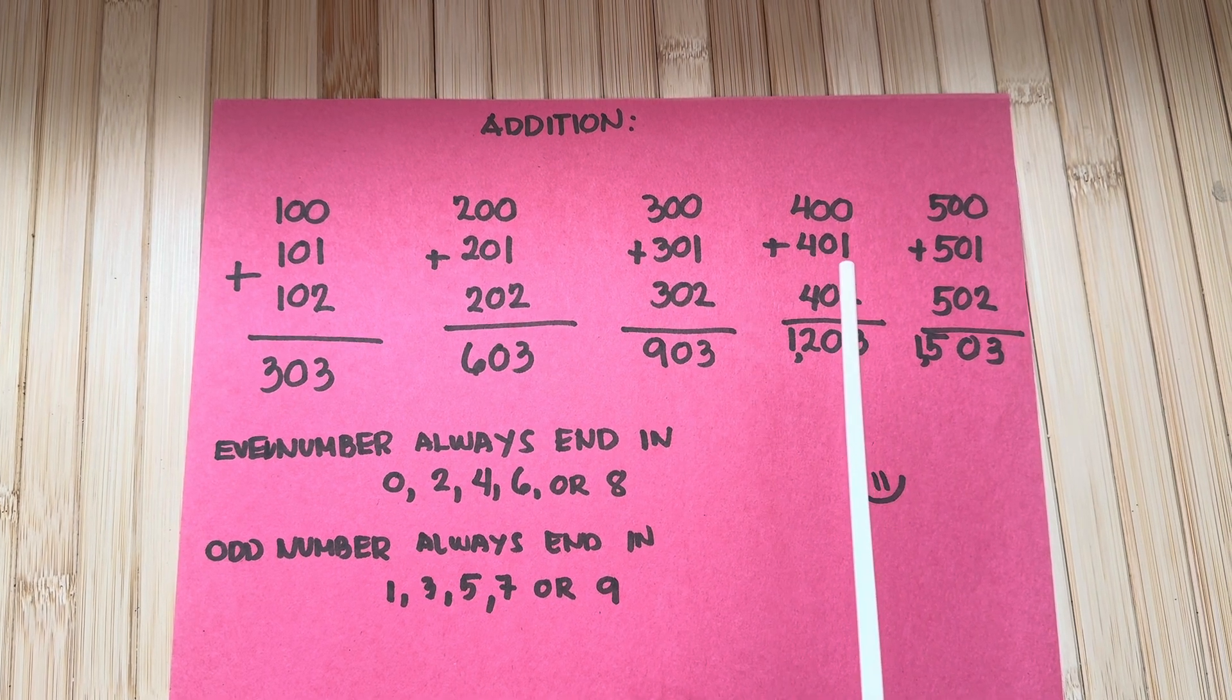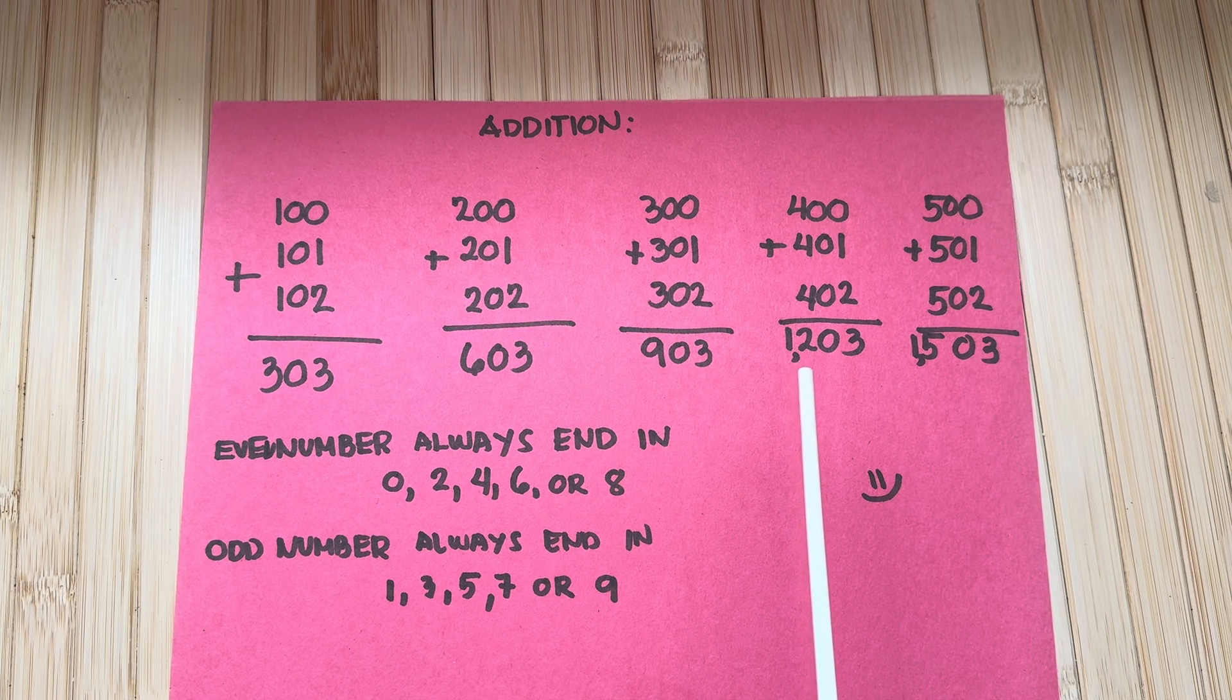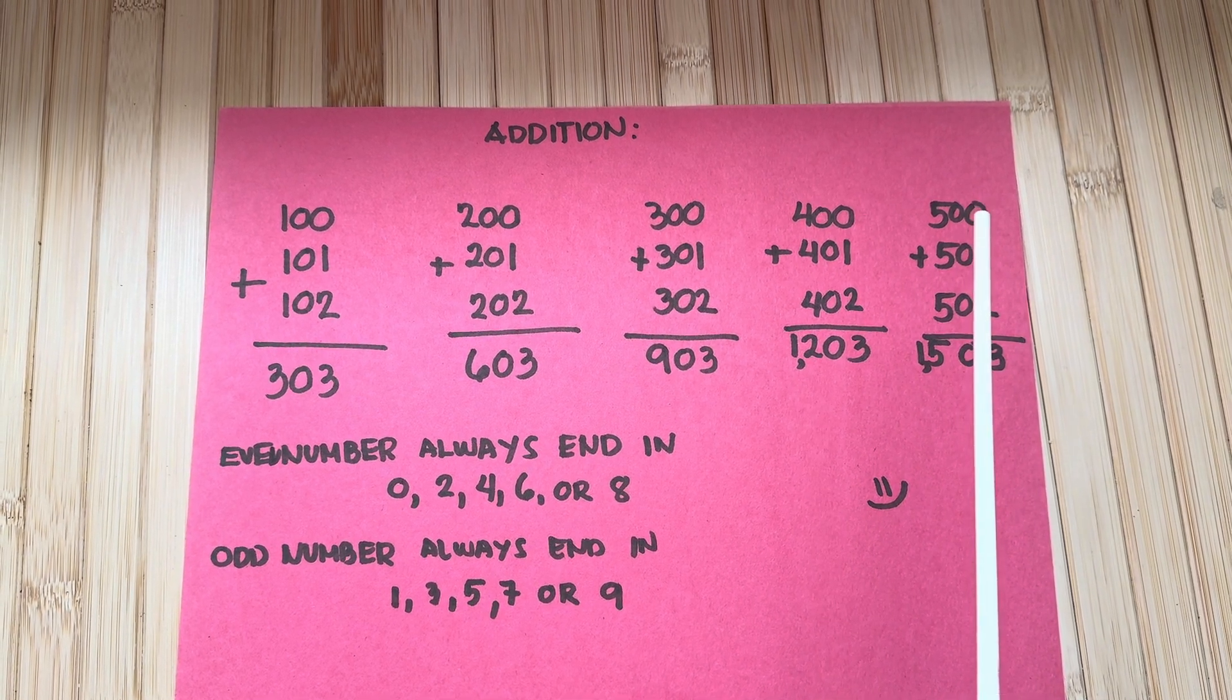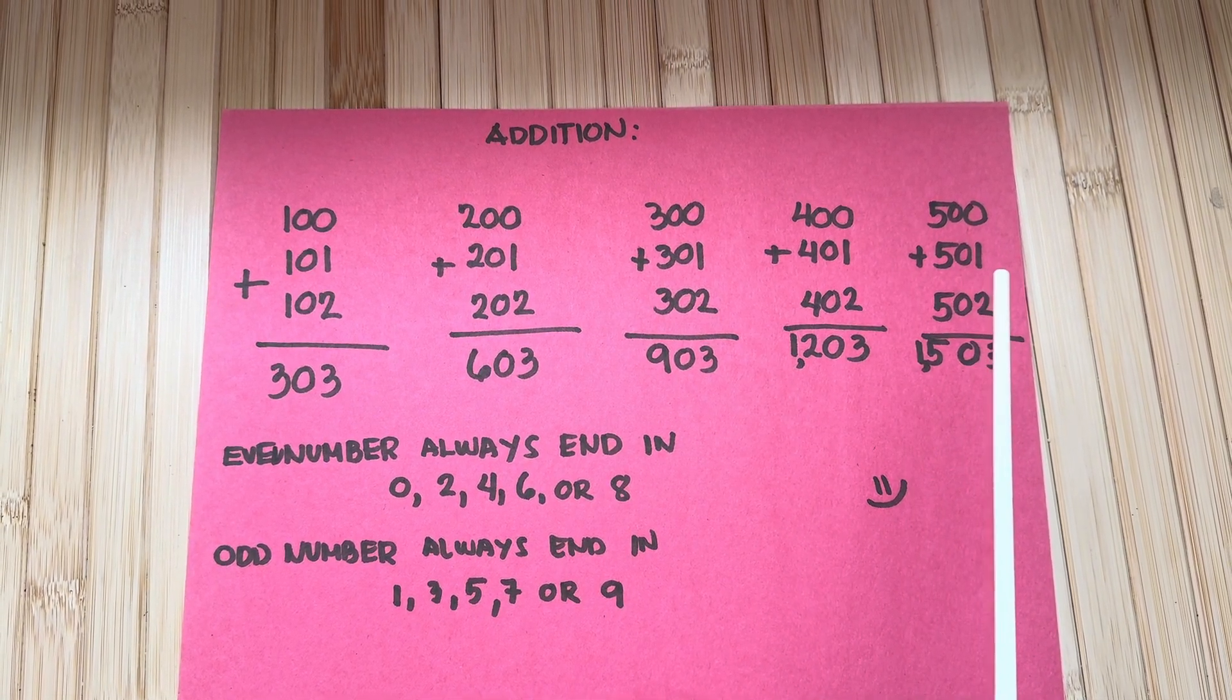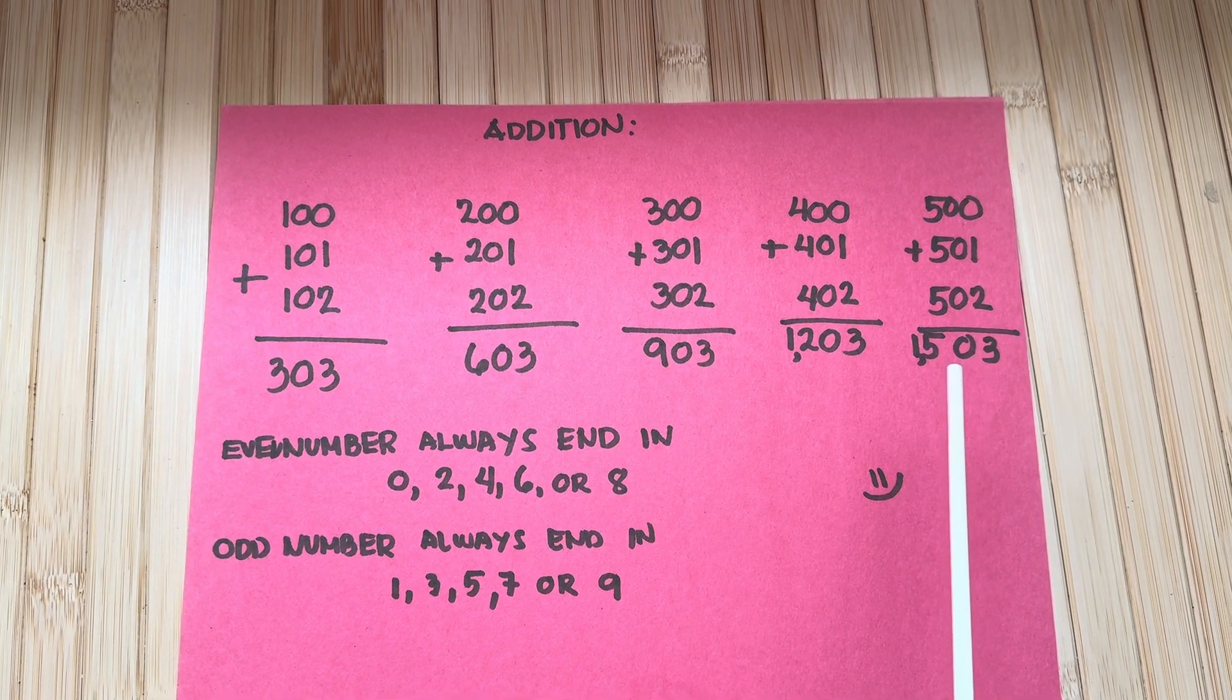400 plus 401 plus 402 equals 1203, and lastly, 500 plus 501 plus 502 equals 1503.